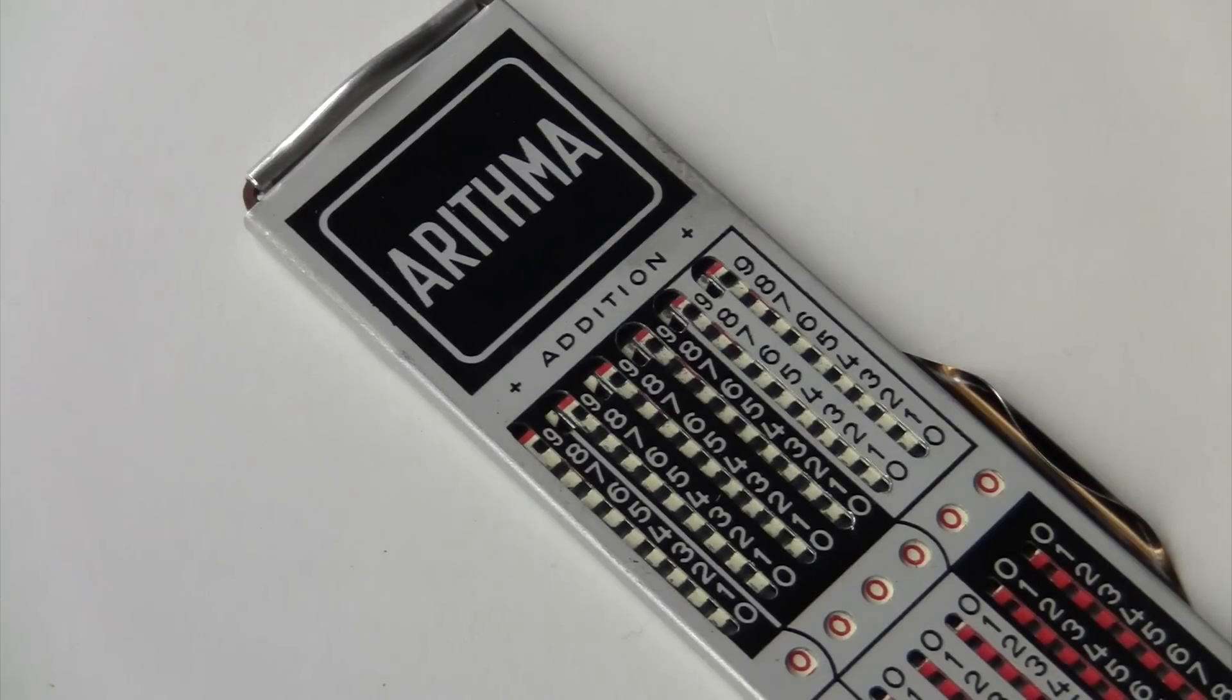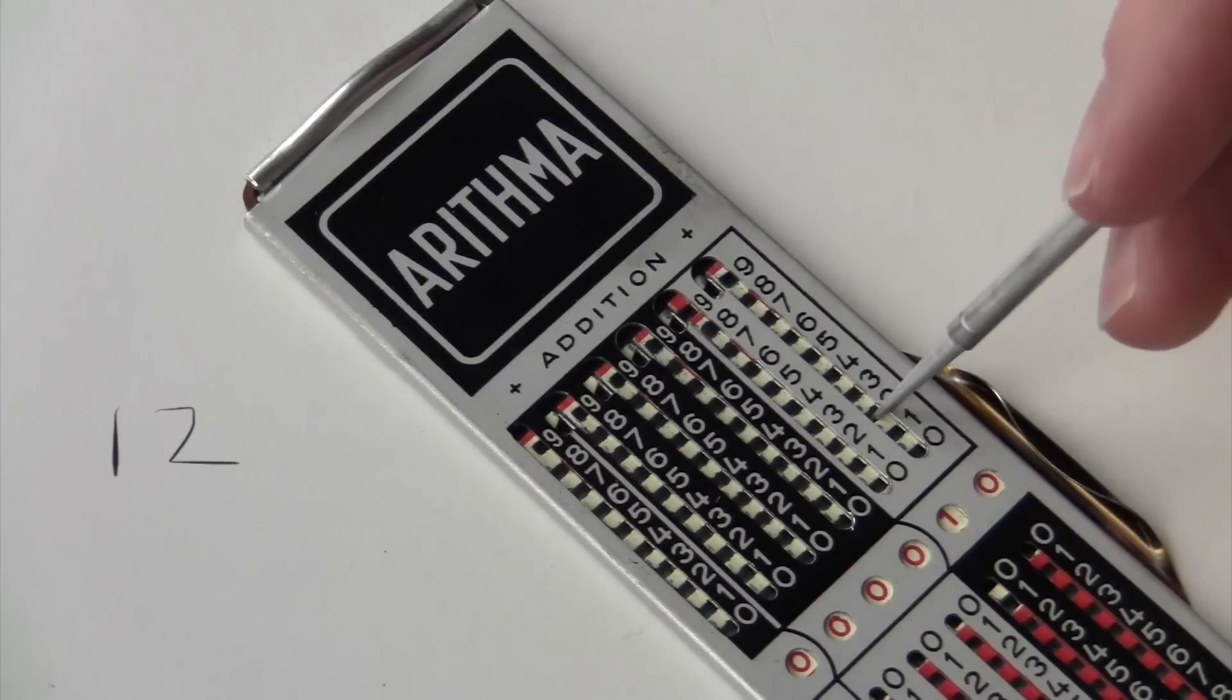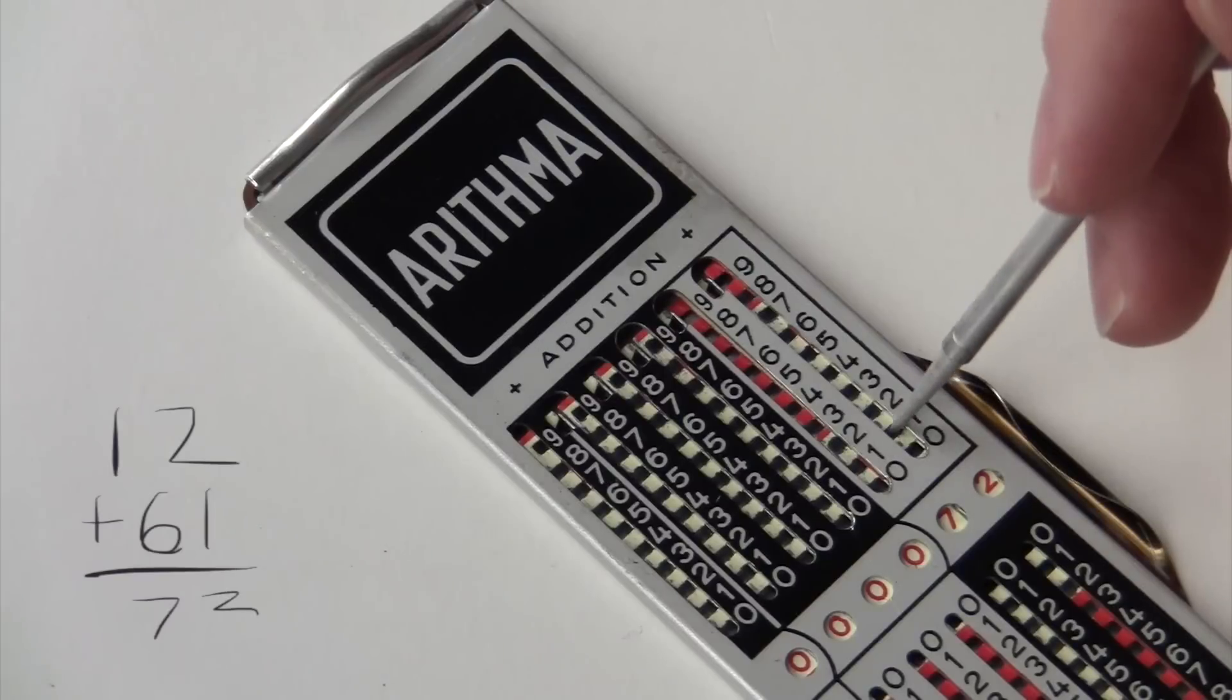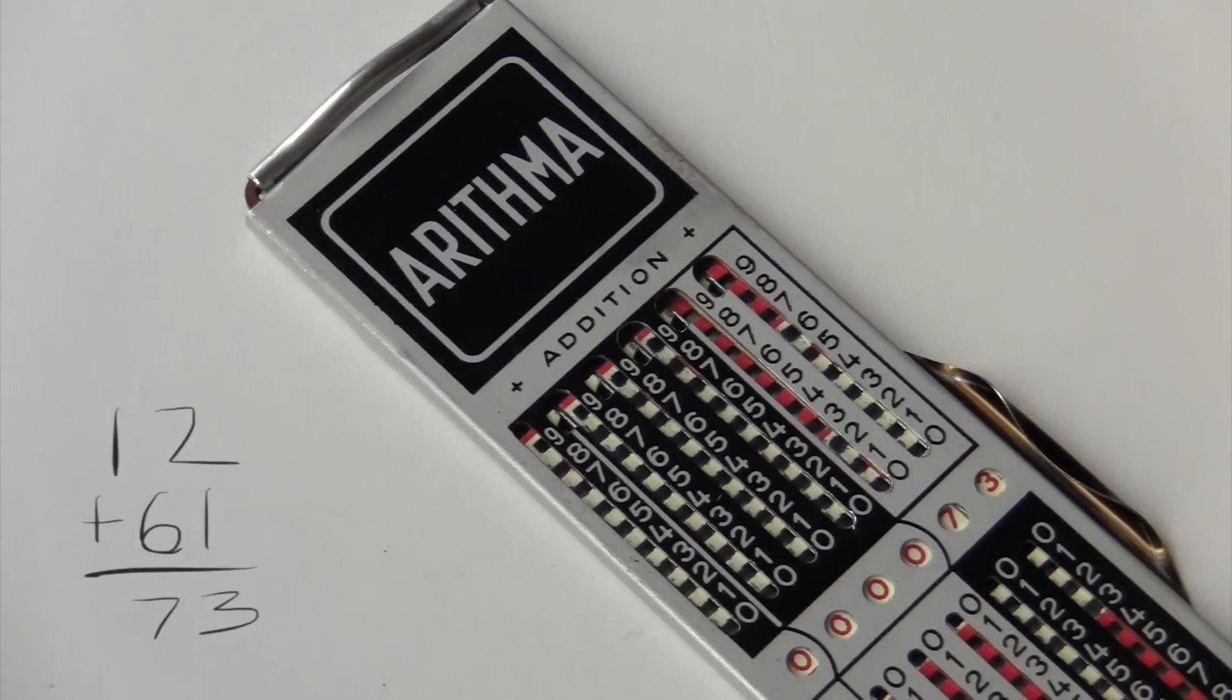To add numbers, you stick your stylus in towards the top and you slide it down. So 12 plus 61 looks like this. I do the 12 and then the 61. You can see the answer in the red numbers there. And you pull up on the bar to clear it back to zero.